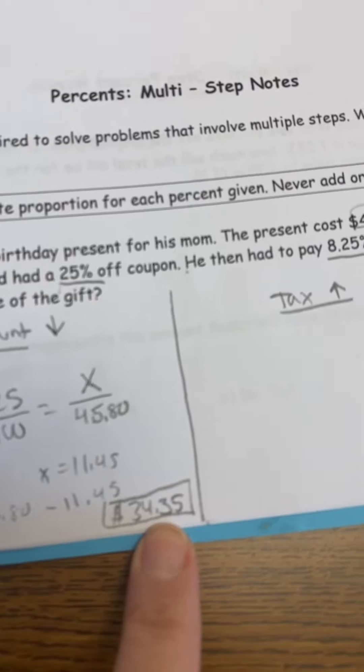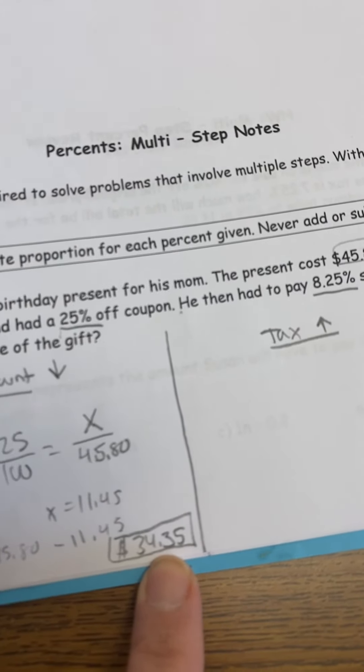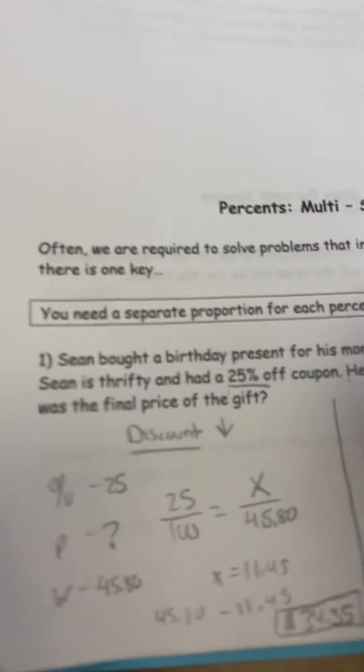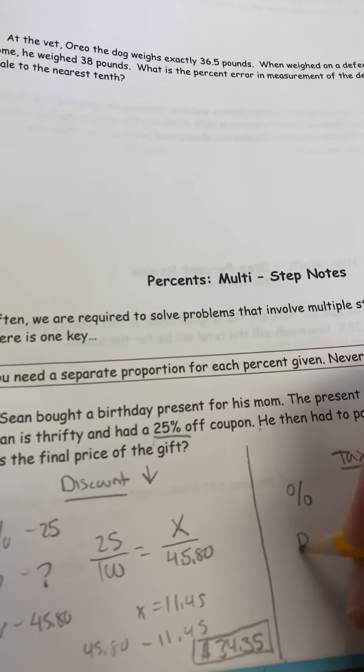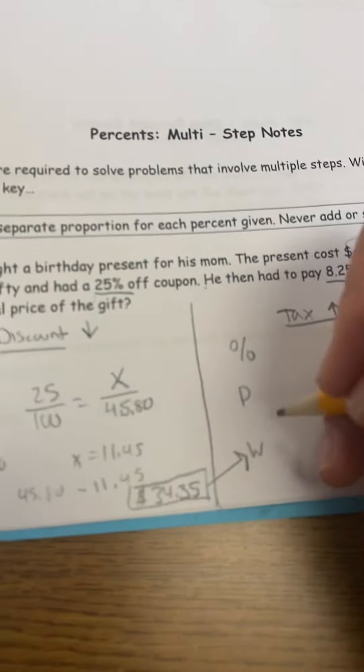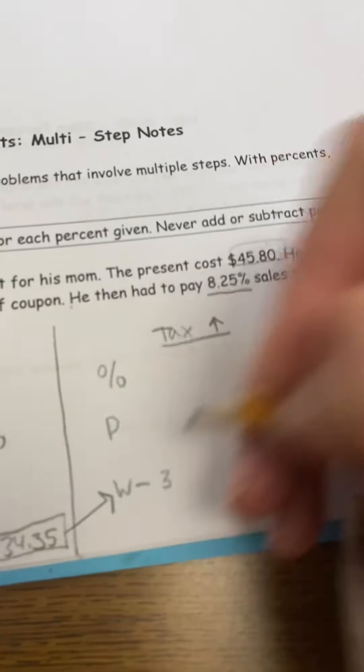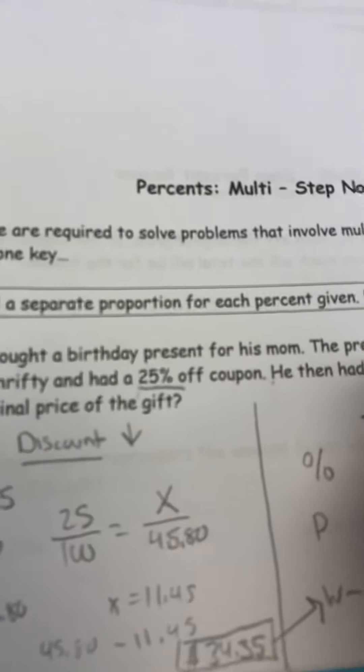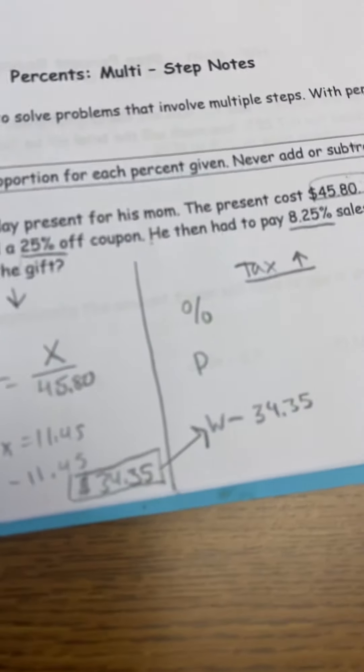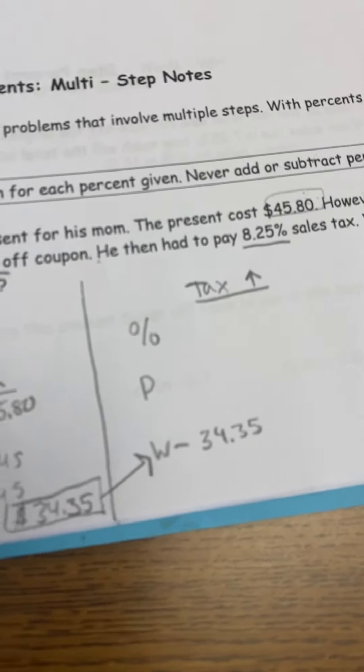But hold up a minute. When you go to the register to pay it, she is not going to say that's $34.35 please. She has to then tax this. In the new problem, your answer to the first one becomes your whole. So I like to box the answer to my first one and make an arrow over to the hole. Once you figure out the hole, I think everything is really downhill from there.